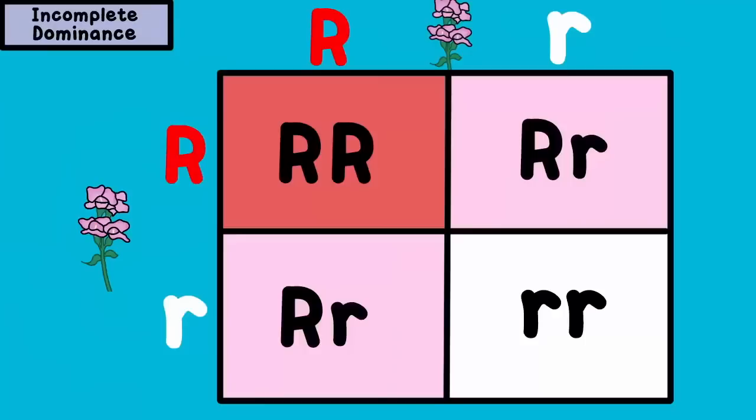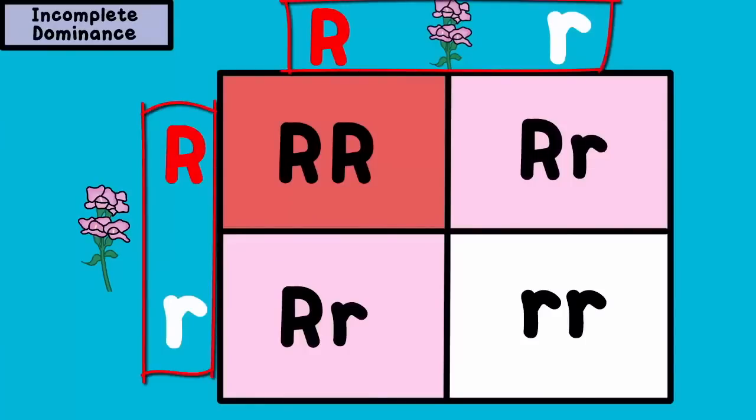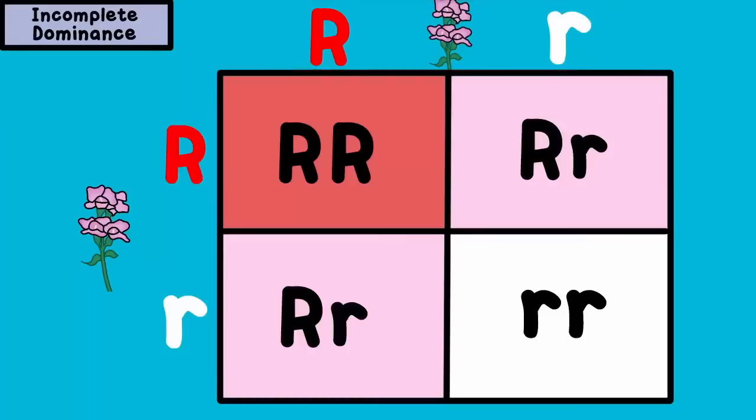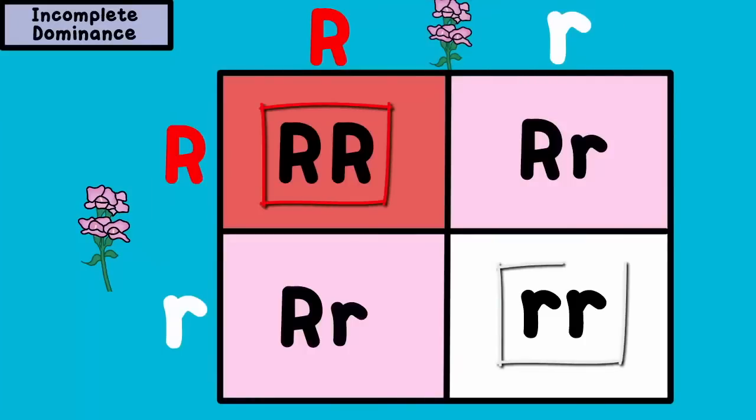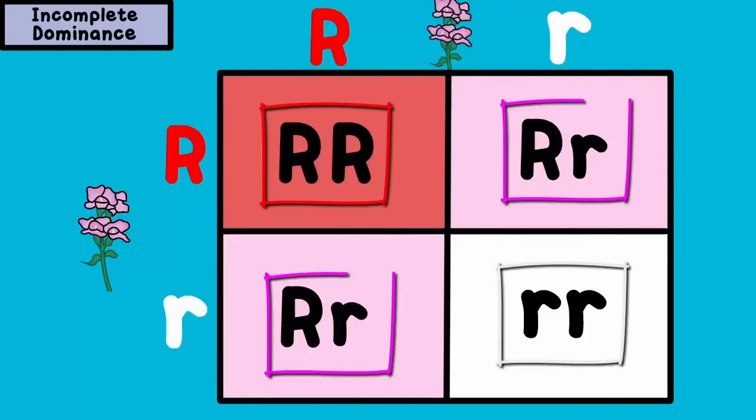If you cross two pink flowers — big R, little r — like shown in this Punnett square here, you can get offspring that are red, white, or pink.